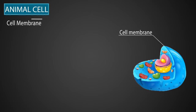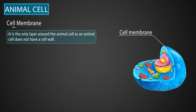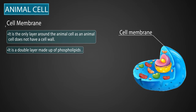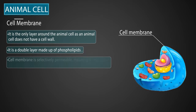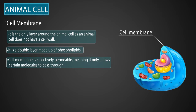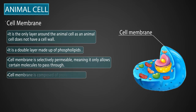Cell membrane: It is the only layer around the animal cell, as an animal cell does not have a cell wall. It is a double layer made up of phospholipids. The cell membrane is selectively permeable, meaning it only allows certain molecules to pass through. The cell membrane is composed of proteins and fats.